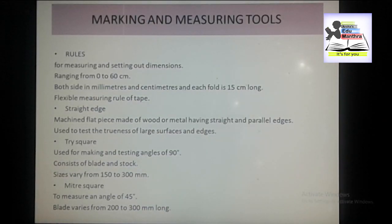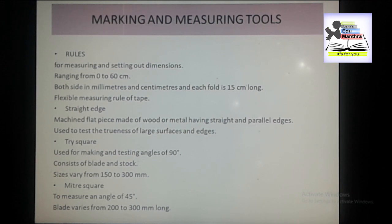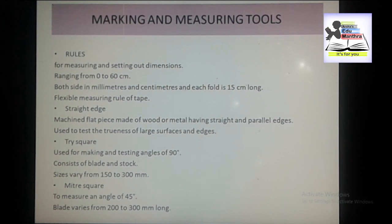Rules of various sizes and designs are used by woodworkers for measuring and setting out dimensions. They usually work with a 4-fold boxwood rule ranging from 0 to 60 centimeters, graduated on both sides in millimeters and centimeters. Each fold is 15 centimeters long and all 4 pieces are joined with each other by means of hinged joints, which make the scale folding. For larger measurements, carpenters use a flexible measuring rule or tape.